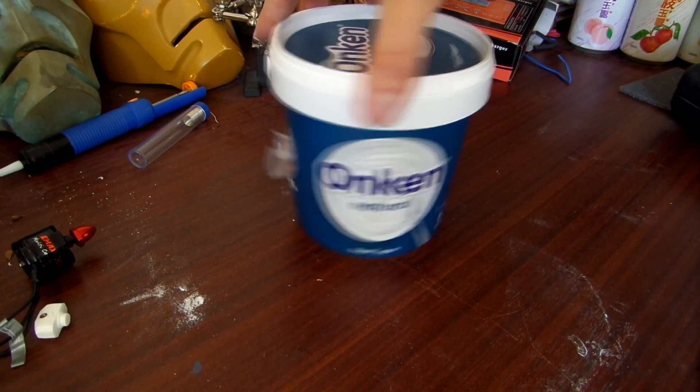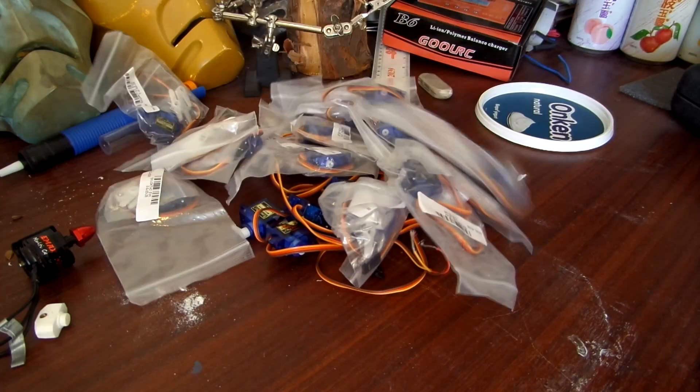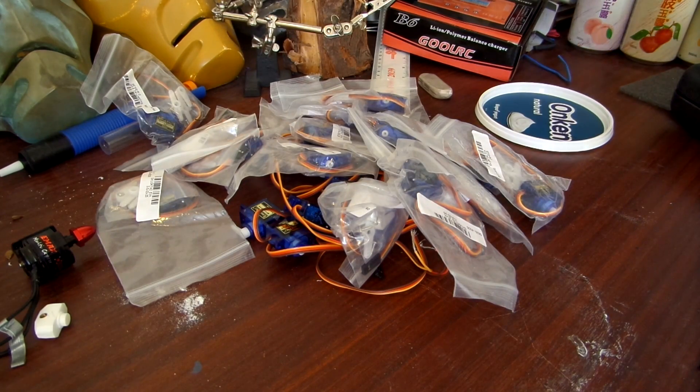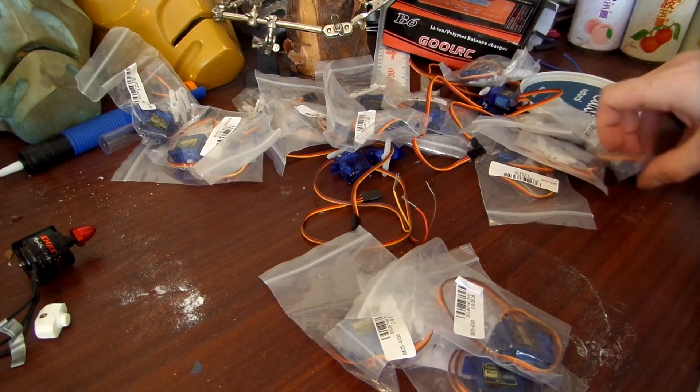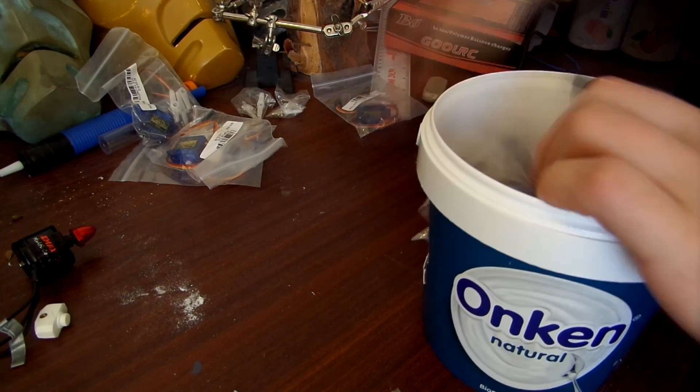And here we have the unsung hero of just about every Arduino electronics project. And that is the Tower Pro micro servo. Royal blue, 9 grams. Manufactured in Shung 4. Truly timeless bit of kit.